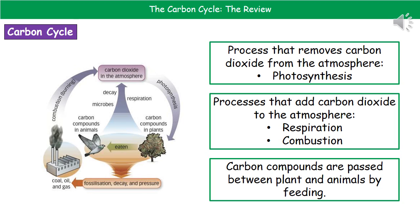To help you with that, remember that the process that removes carbon dioxide from the atmosphere is photosynthesis. That is the only one that is going to have an arrow going from carbon dioxide in the atmosphere to a tree. So as soon as you see that arrow, that is photosynthesis.